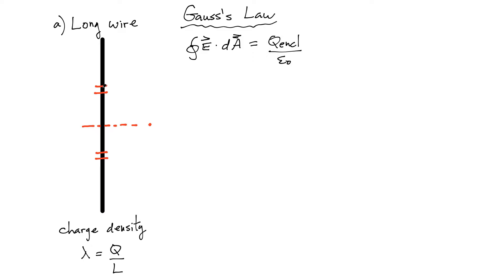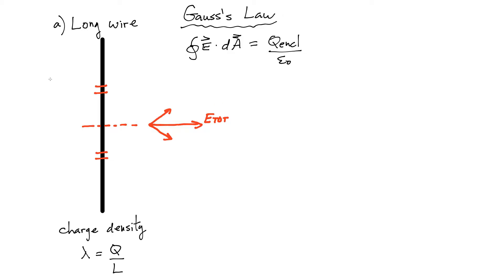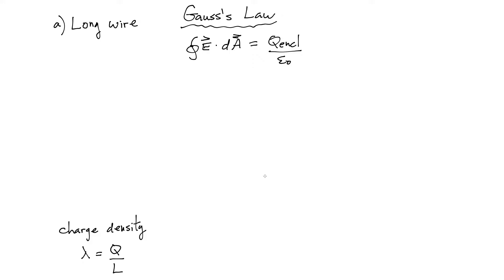This top bit of charge will produce an electric field pointing away from it, and the bottom one will produce an electric field pointing away from it. So the total electric field is going to have to be in this radial direction. So once you've convinced yourself that the electric field is going to be radially outwards, the next thing you have to do is simply apply Gauss's law keeping this in mind.